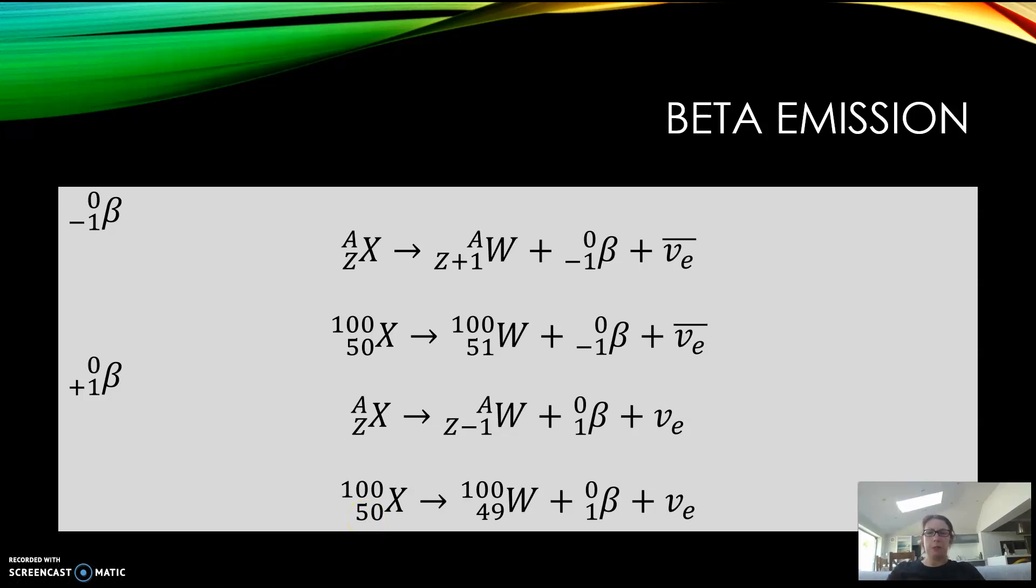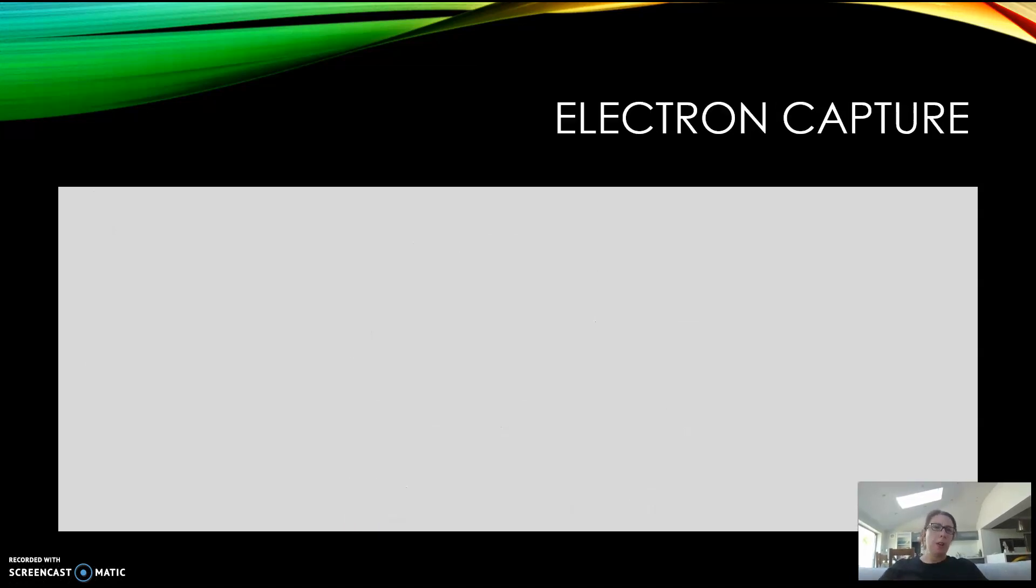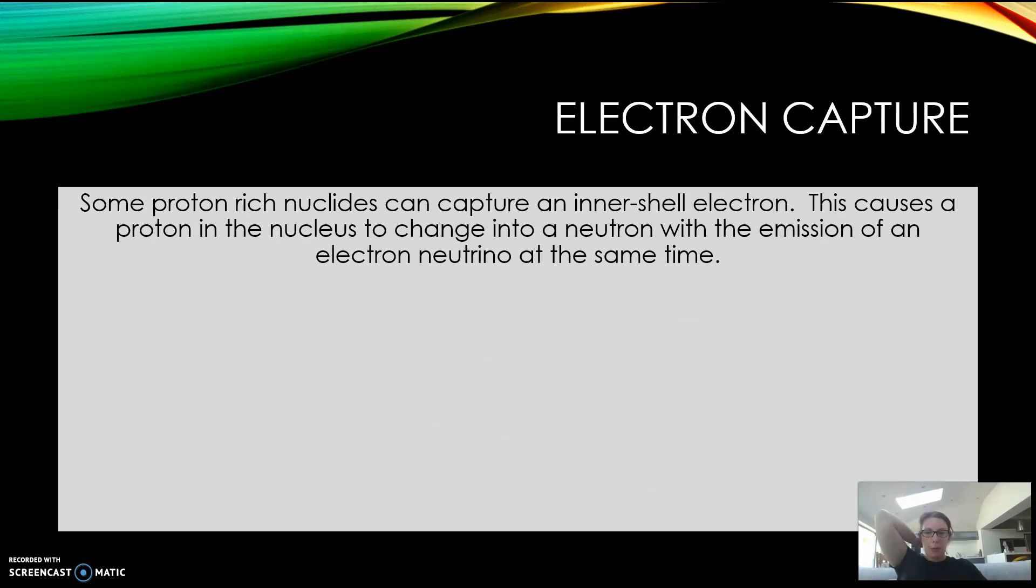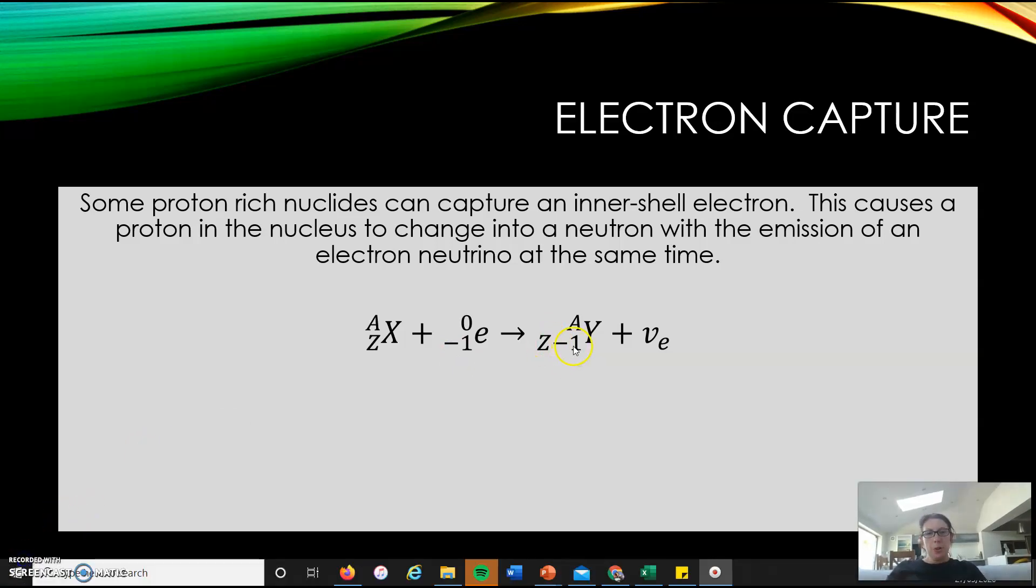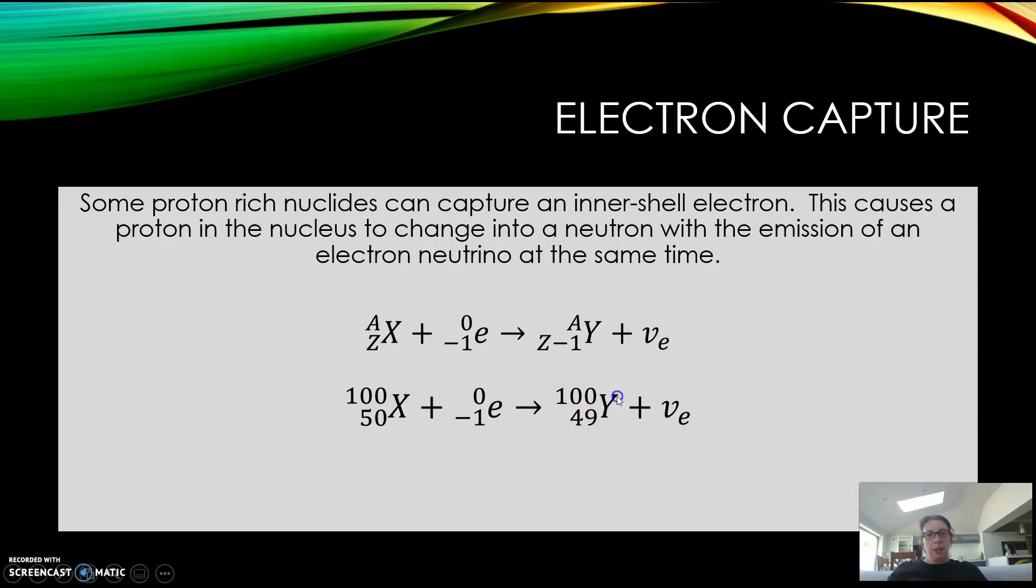If you can't remember doing that, you can look back at chapter one in your AS books. There's another type we talked about: electron capture. Some proton-rich nuclei can capture an inner shell electron, which causes a proton in the nucleus to change into a neutron with emission of an electron neutrino at the same time. This is what's going on here - the isotope adds an electron on, so you lose a proton at the bottom and you get a neutrino. Again, 50 minus 1 is 49, the top number stays the same because your proton's turned into a neutron.